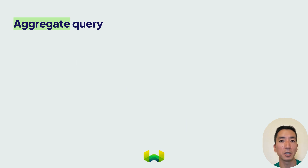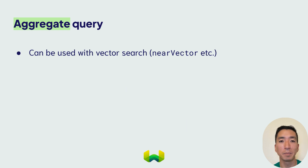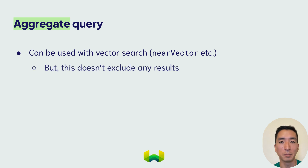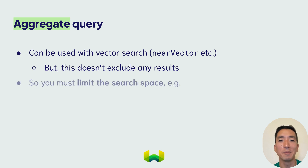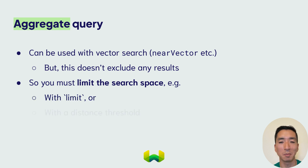You can also use vector search parameters like near text in an aggregate query. But because vector search finds objects by degrees of similarity, it doesn't exclude any objects. So when performing aggregations with a vector search, it is crucial that you limit the search space by setting an explicit limit or threshold with a limit or distance argument, for example.